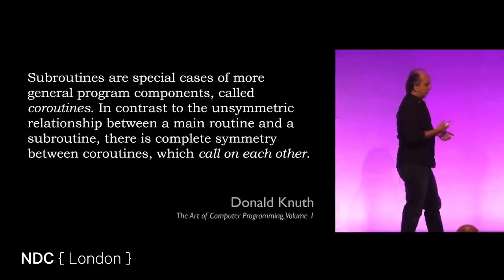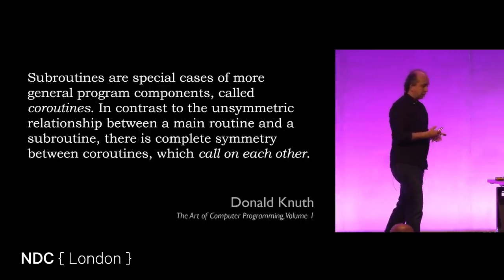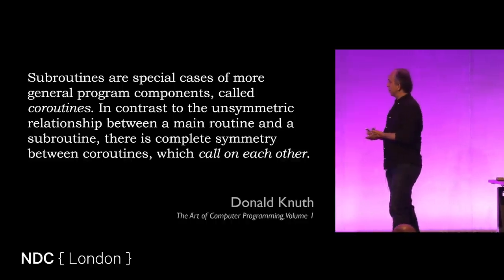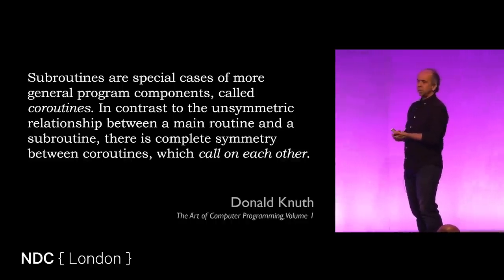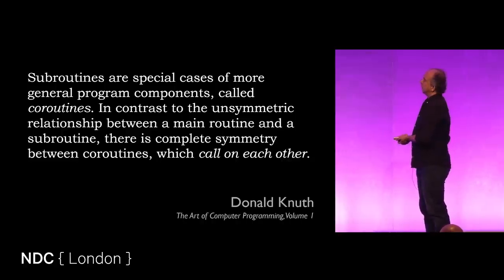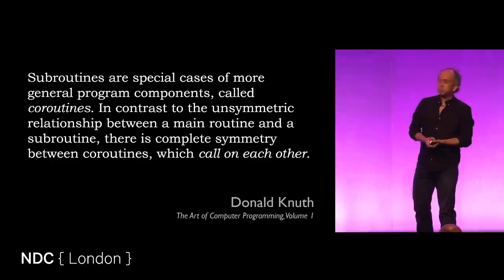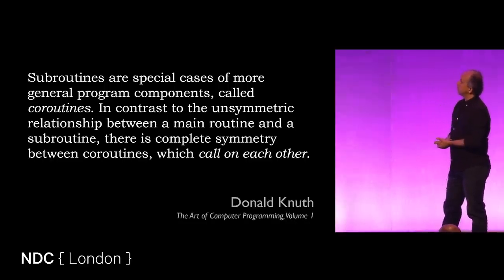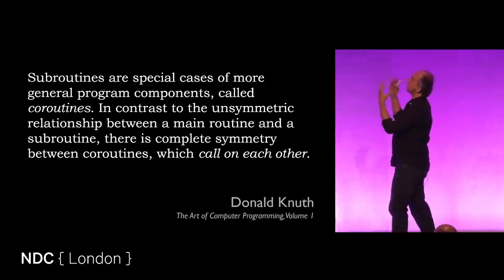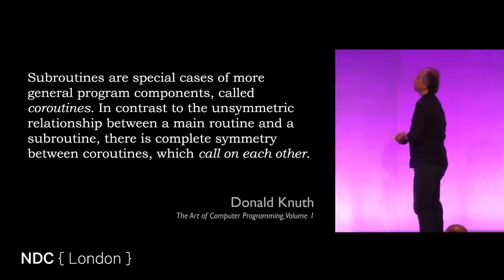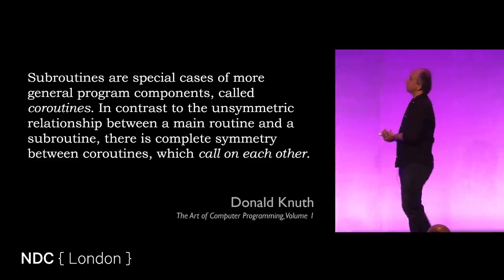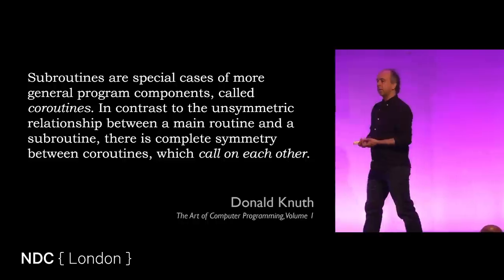Historically, you can find Donald Knuth in the first edition of The Art of Computer Programming, Volume 1, written in the early 60s, where he talks about coroutines and shows you how to implement them. 'Subroutines are special cases of more general program components called coroutines. In contrast to the asymmetric relationship between a main routine and a subroutine, there is complete symmetry between coroutines, which call on each other.'